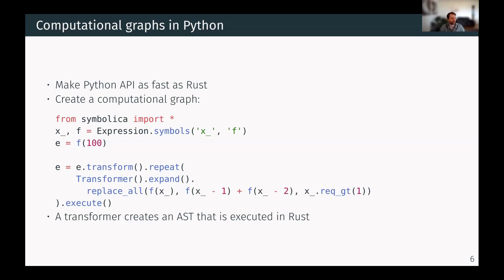Here there's a small example program where you apply some sort of Fibonacci relation. And even though you code all the instructions in Python, it will be executed entirely in Rust.